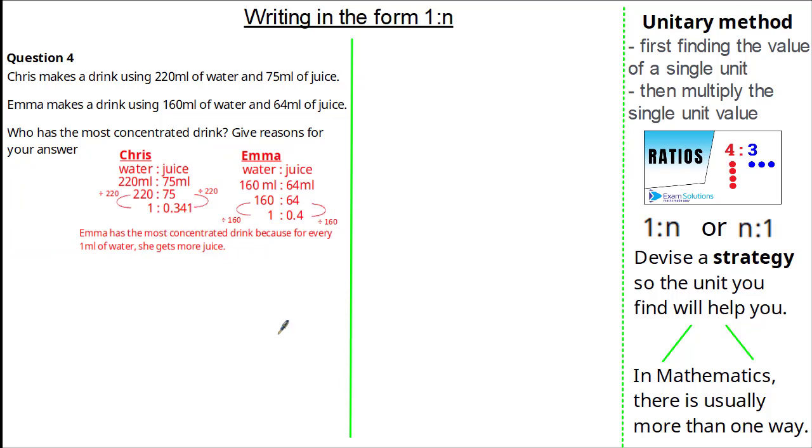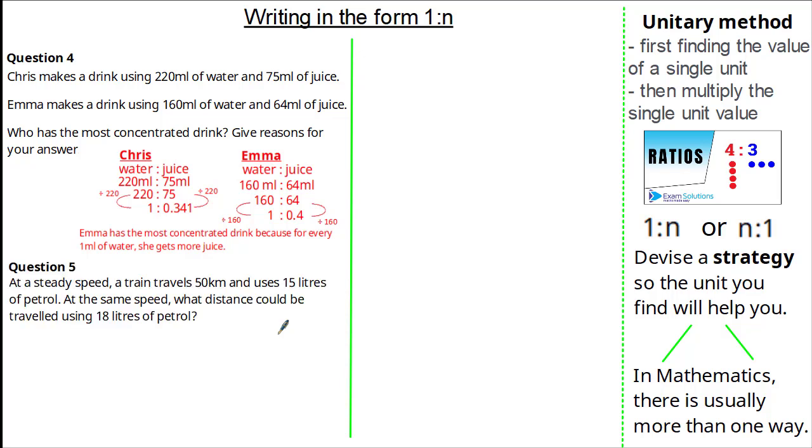In the next questions, sometimes finding 1 to N will help you more easily than finding N to 1. So knowing what you're asked for is very important. Now in this question, it states, At a steady speed, a train travels 50 kilometres and uses 15 litres of petrol. At the same speed, what distance could be travelled using 18 litres of petrol?